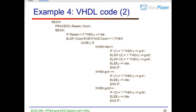Begin process (reset, clock). If reset = '0' then Y <= idle. Else if clock'event and clock = '1' then. Case Y is: when idle => if R1 = '1' then Y <= GNT1; else if R2 = '1' then Y <= GNT2; else if R3 = '1' then Y <= GNT3. EKI-448, FPGA and ASIC Design with VHDL, Example 4, VHDL code part 3.